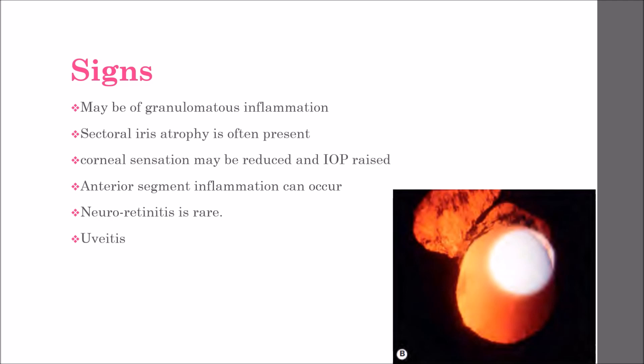Anterior segment inflammation can occur in primary varicella zoster virus infection, that is in cases of chickenpox, particularly in immunocompromised patients. Panuveitis can also be present, but it is very rare.